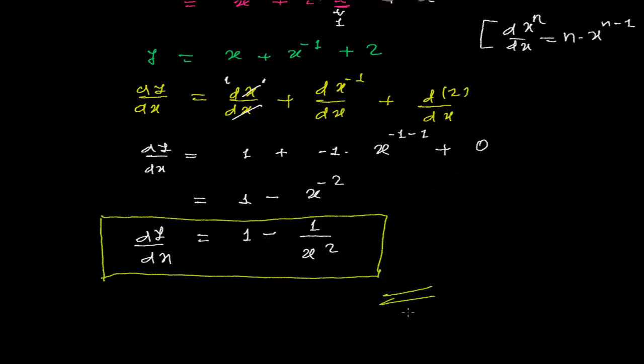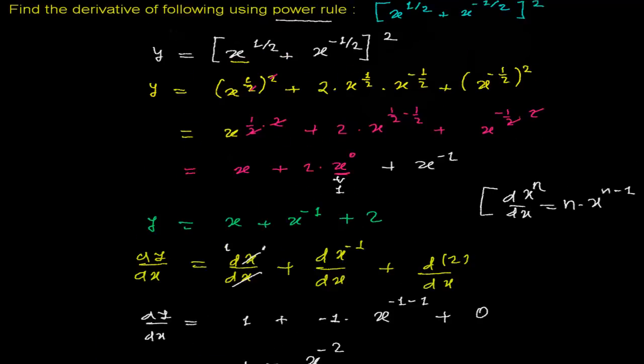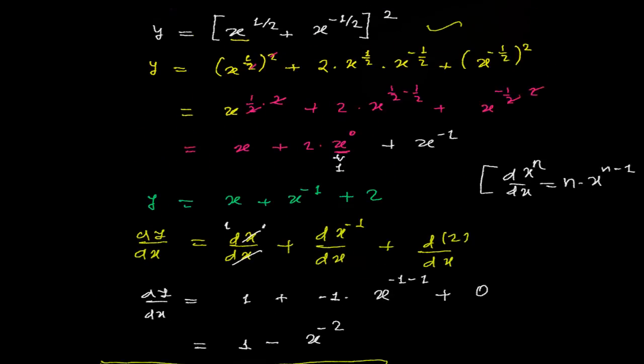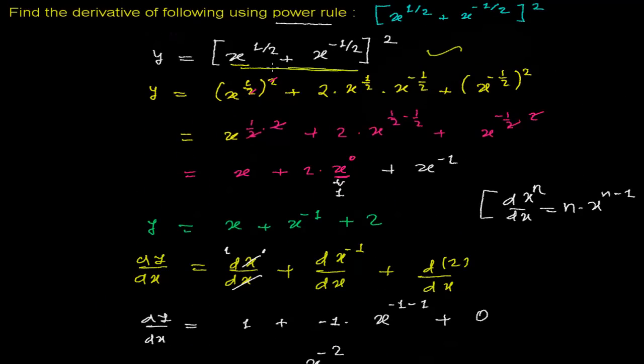We are done. This is the derivative of our function. Simply, at last I used the power rule. If you want, you can use here only the power rule by assuming this as a base and this as a power. You'll get the answer. I hope you understand this.